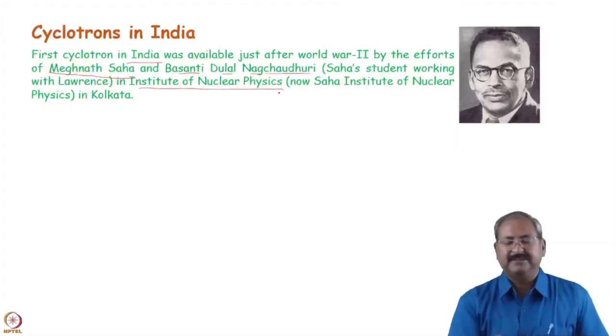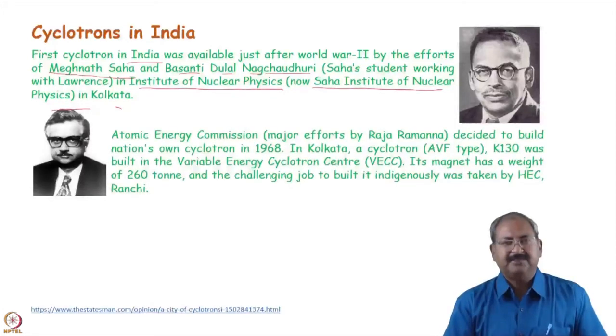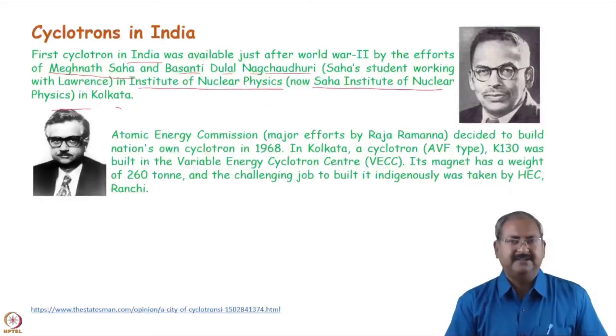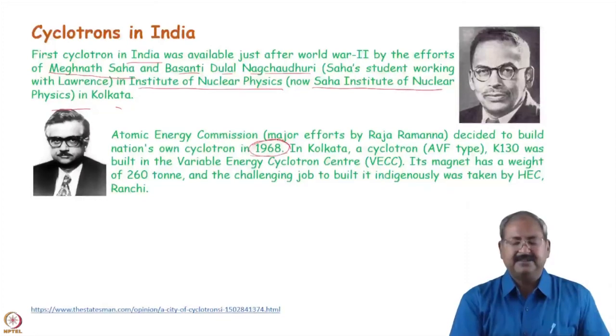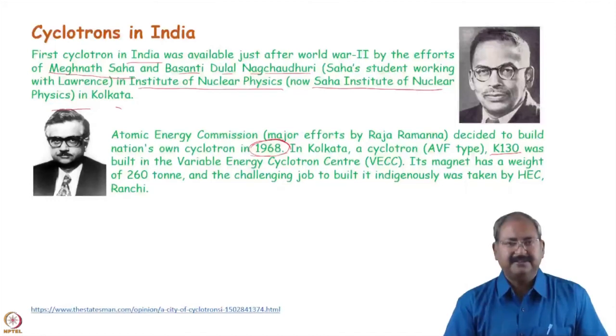That was in the Institute of Nuclear Physics. Now, this Institute of Nuclear Physics has been renamed as Saha Institute of Nuclear Physics in Kolkata. So, that was the first cyclotron in India, available for research. Later on, Atomic Energy Commission, mainly Dr. Raja Ramanna, put efforts to make indigenous cyclotron in India. Because only then, accelerator building capacity will be enhanced in the nation. And we can make our own accelerators for our own research purposes. And again, you can see that this was in the early stage of 70s or later stage of 60s. And at that time, a K130 AVF type cyclotron was built in India at the Variable Energy Cyclotron Centre in Kolkata.